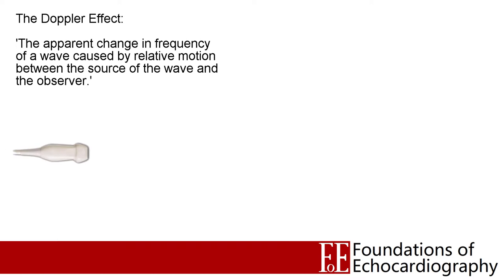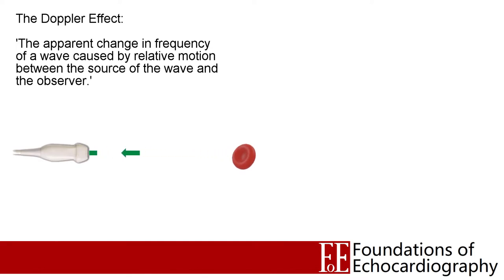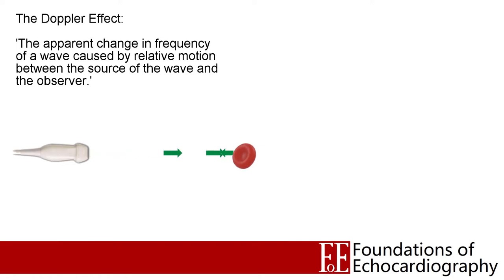Here the observer is our transducer, and the source of our wave is our reflective surface — in this example, a red blood cell. Now if there's no relative motion between these two, if they're at a fixed distance apart, then the wave that leaves the transducer and strikes the red blood cell will be reflected back towards the transducer with an identical frequency. We can imagine that each of the green arrows represents the peak of one wave, spread evenly apart, returning equally evenly spaced when they come back to the probe.